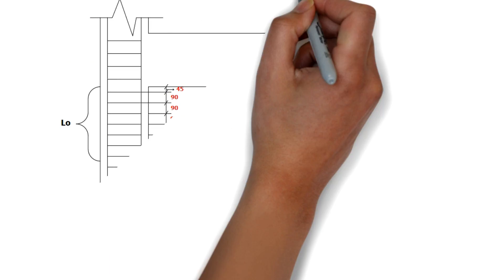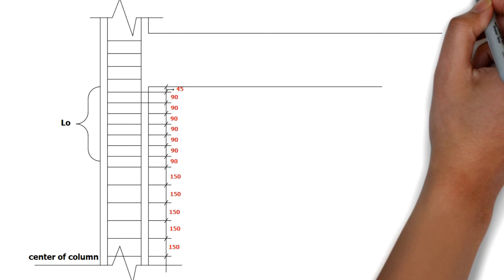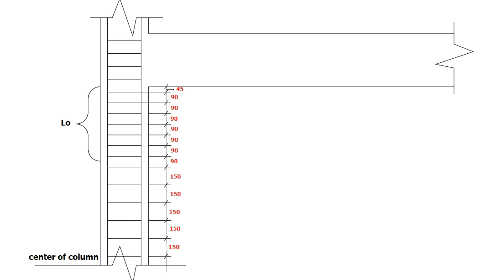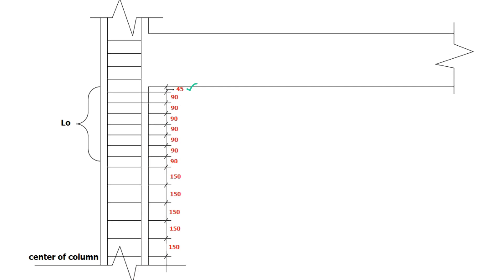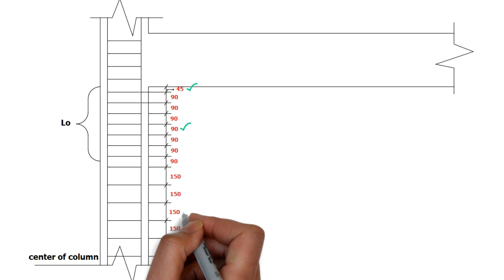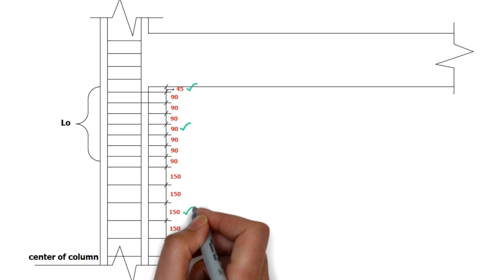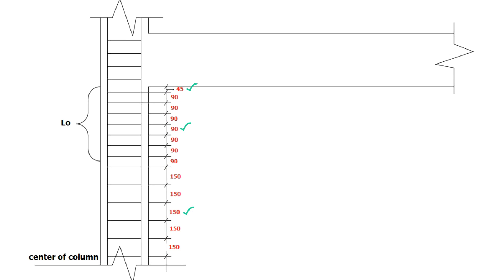The overall result of our shear reinforcement design for this column is as follows: the first hoop is at 45 mm, followed by 90 mm spacing up to length L0, and from that point up to the center of the column the spacing is 150 mm. The same applies to the other side of the column.